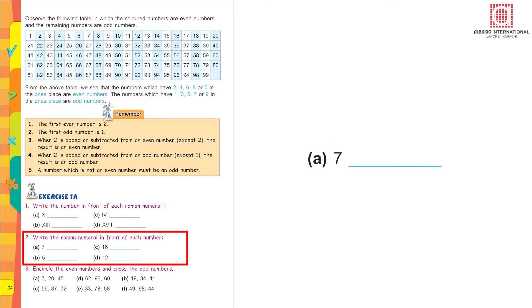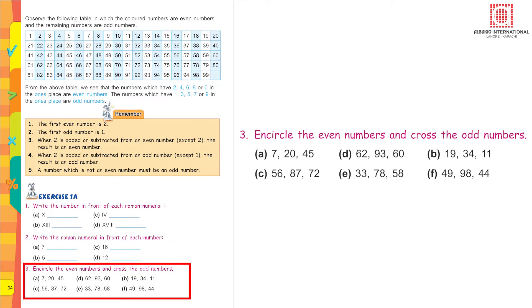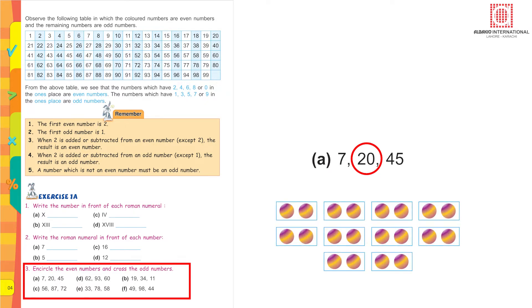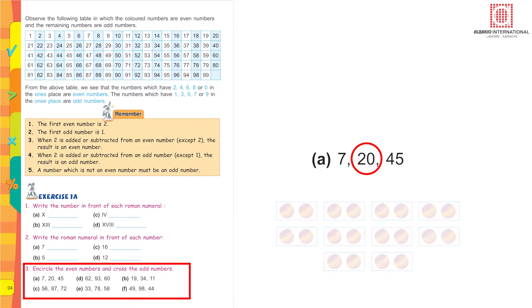For 7, you write VII. That's good. Encircle the even numbers and cross the odd numbers. Even numbers are those which can be divided by 2, which can be put in groups of 2. For example: 7, 20, 45 — which is the even number here? Yes, 20, because with 20 balls you can make 10 pairs of 2 balls each. Cross out 45 and 7. This is how you are going to attempt the rest of the questions.